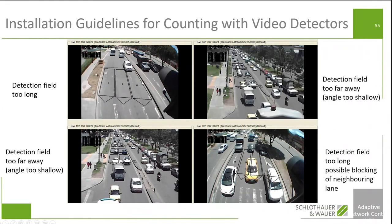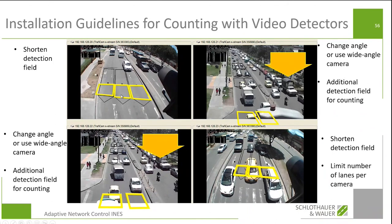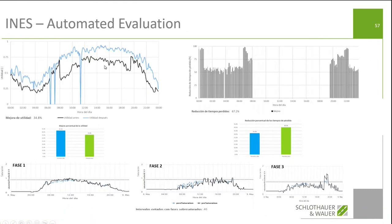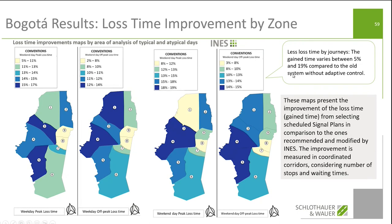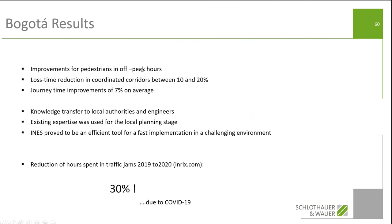We also learned about video detectors and how to install them so they can count reliably. In the end we did an evaluation and the results were actually pretty positive. We had an average gain of 7% in travel time in adaptive corridors, and a lost time reduction of between 5% and 19% depending on which part of the city. Big improvements for pedestrians in off-peak hours, lost time reduction in coordinated corridors between 10% and 20%, and overall journey time improvement of 7%. And also 30% less hours spent in traffic — but that was due to COVID-19.